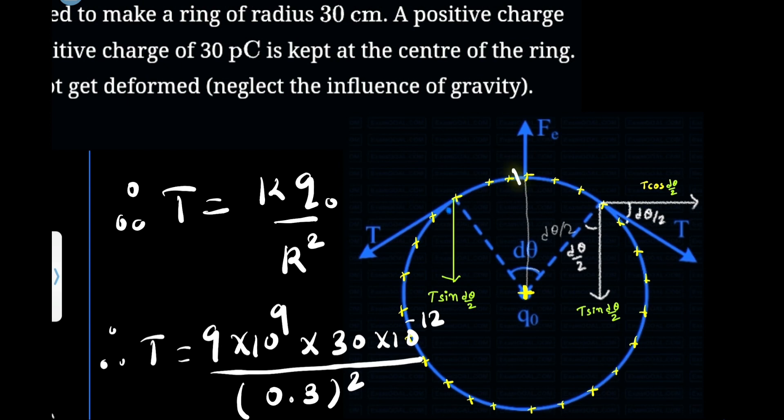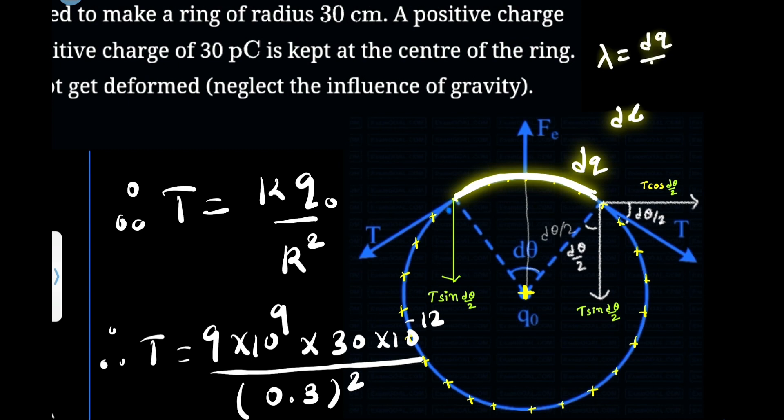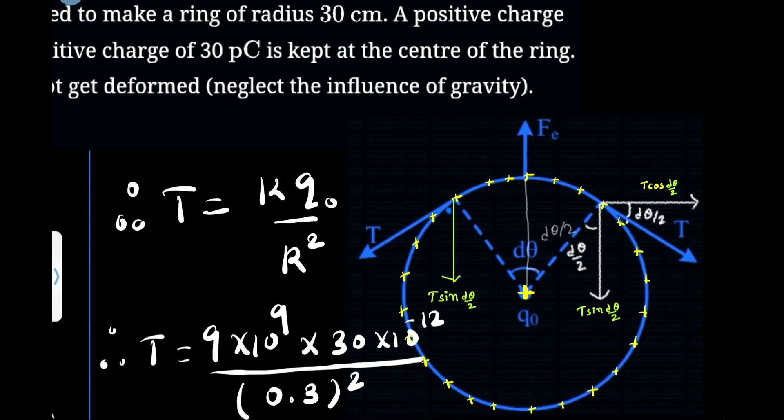Now let us assume a very small part of the ring. To make it more visualized, I have taken a big part. So actually it is a zoomed version of a very small part. Let us assume a very small charge dq is contained by this arc of length dl. Then λ = dq/dl, or dq = λdl, that we will use later.